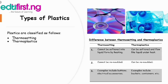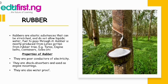Examples of thermoset plastics include buttons, electrical accessories, and compact discs — you can see a picture of a compact disc below. Examples of thermoplasts include buckets, containers, spoons, kegs, and water bottles — you can find the picture just above the compact disc picture.